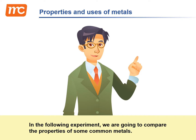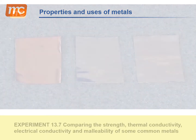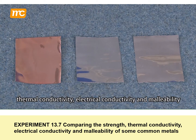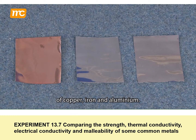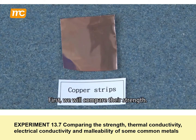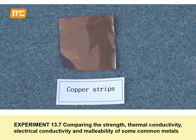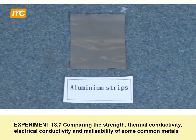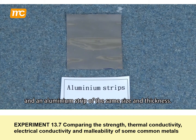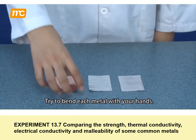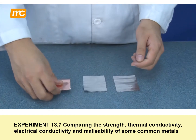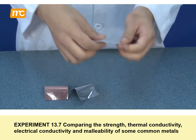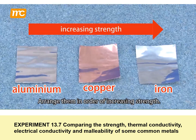In the following experiment, we are going to compare the properties of some common metals — specifically the strength, thermal conductivity, electrical conductivity, and malleability of copper, iron, and aluminum. First, we will compare their strength. You are given a copper strip, an iron strip, and an aluminum strip of the same size and thickness. Try to bend each metal with your hands, then arrange them in order of increasing strength.